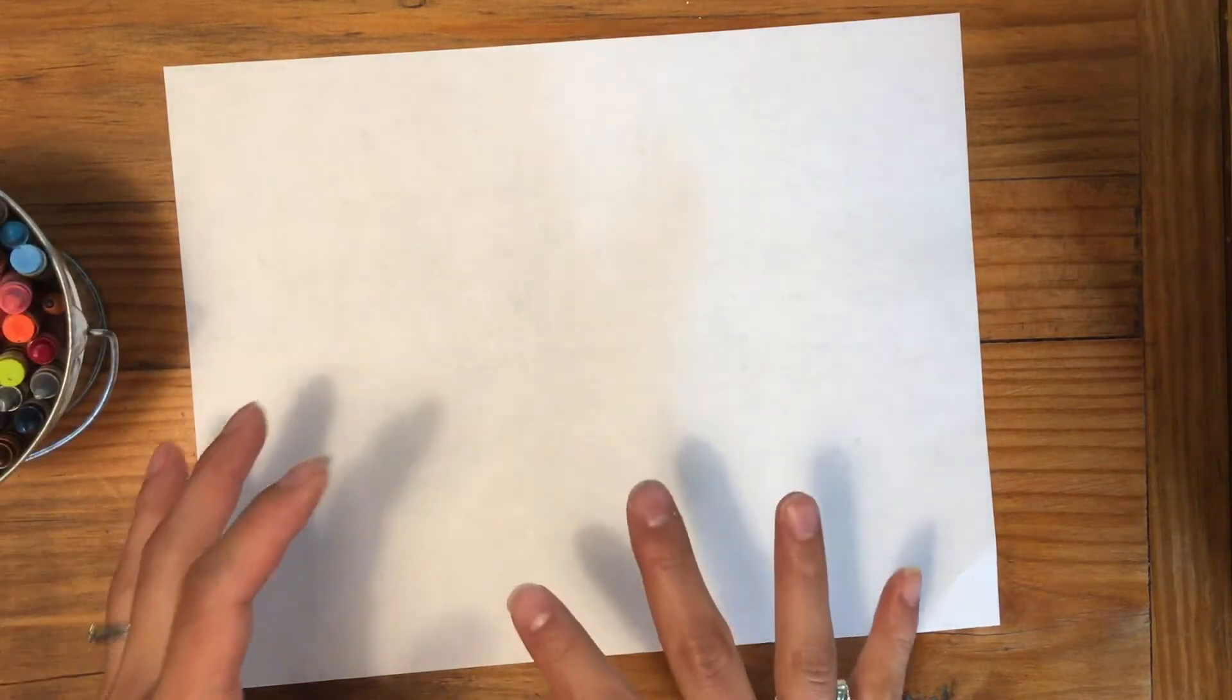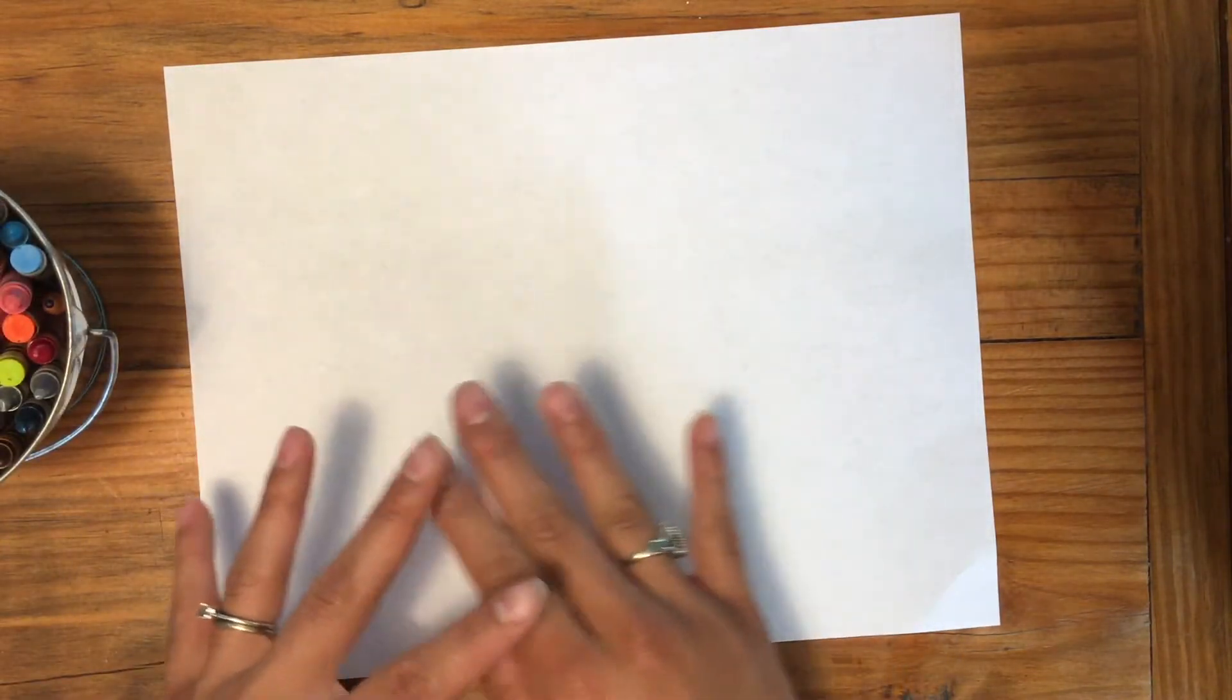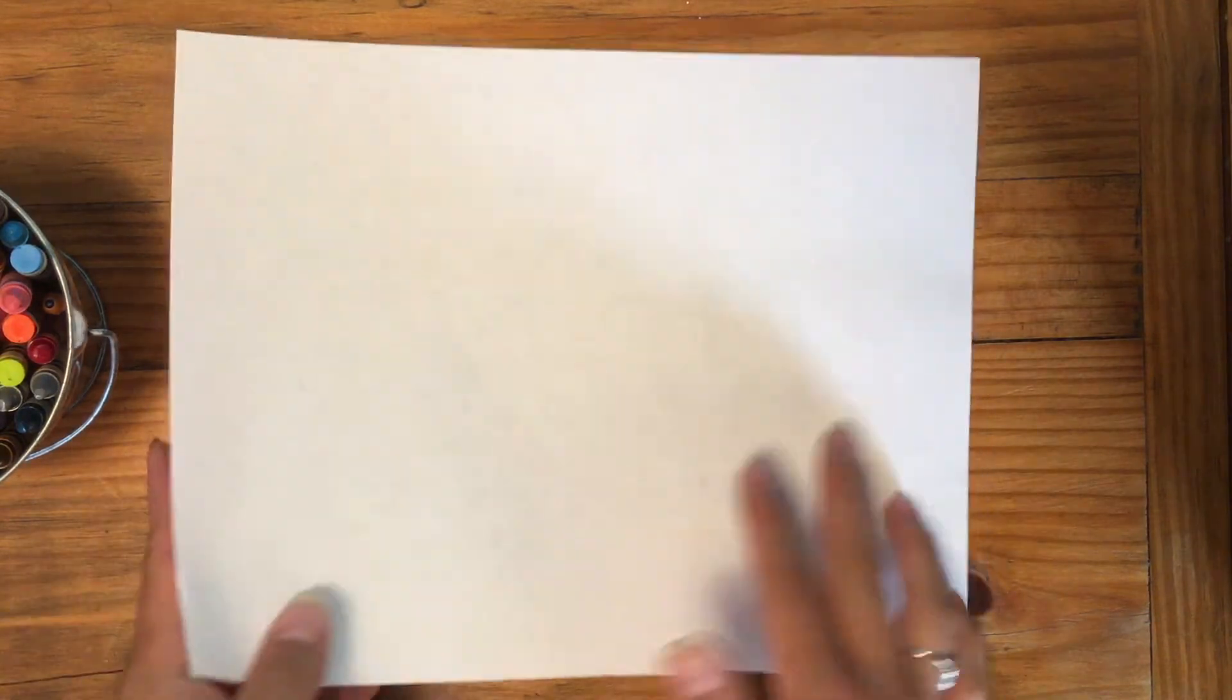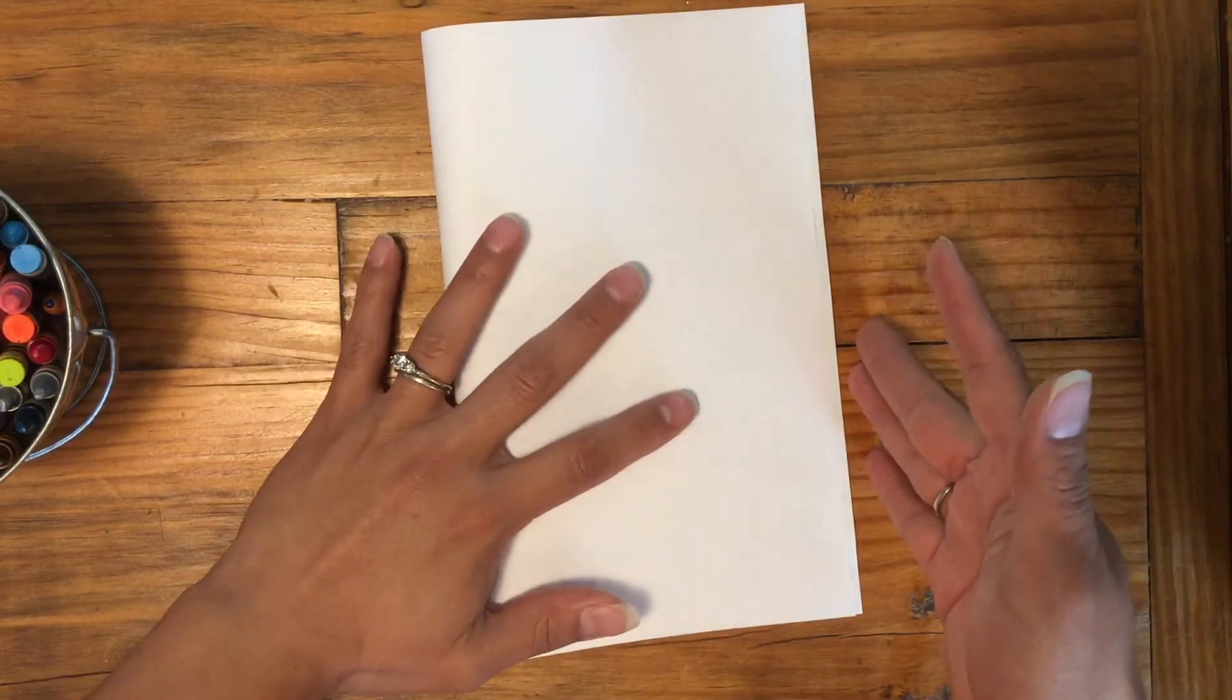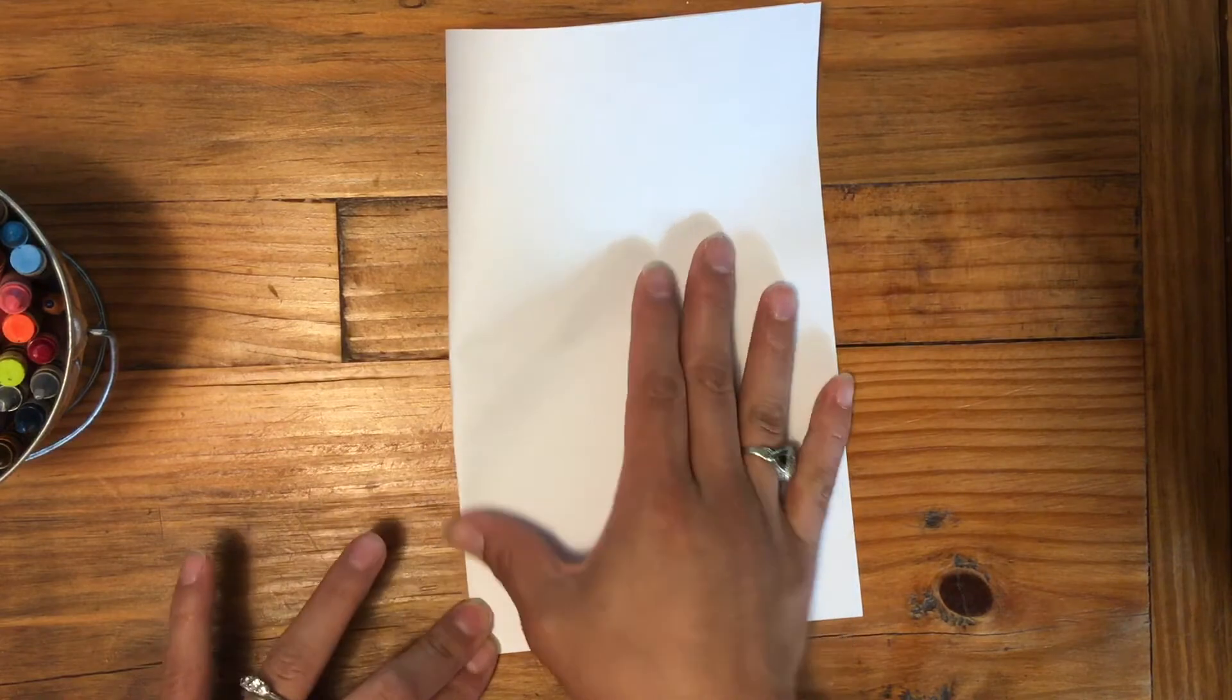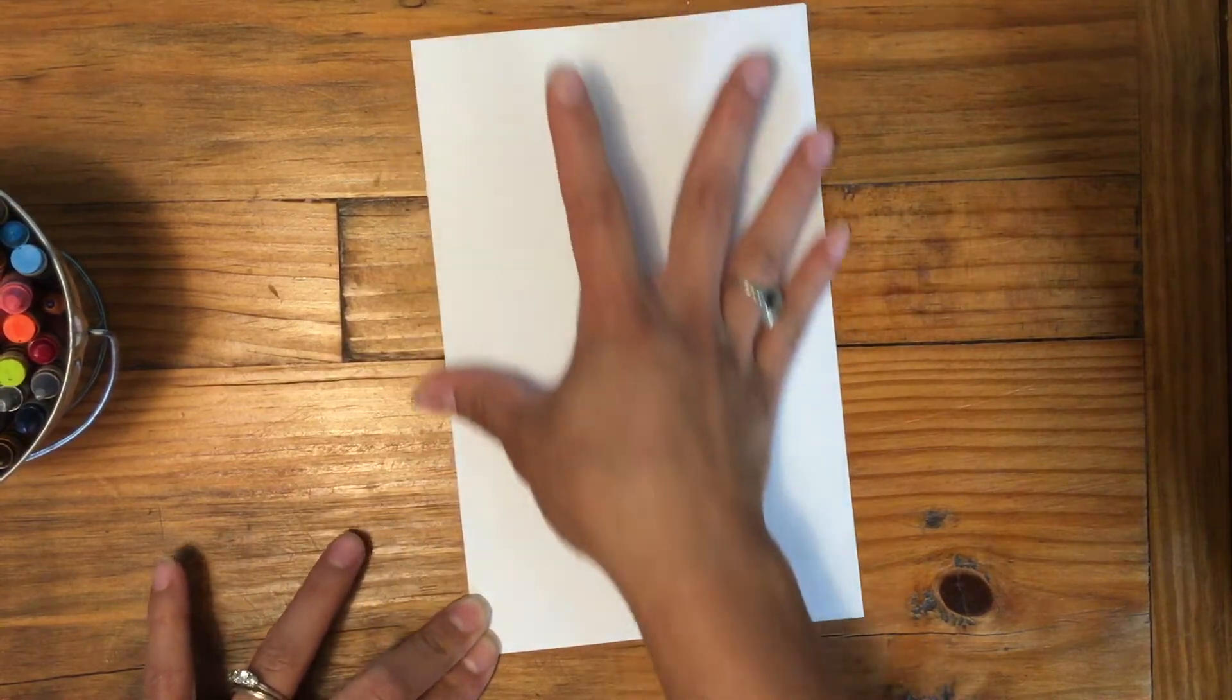Now we're going to be making some rainbow transfer paper. Taking me back to my childhood days. The first thing you're going to do is take your piece of paper and fold it in half like you were making a card.